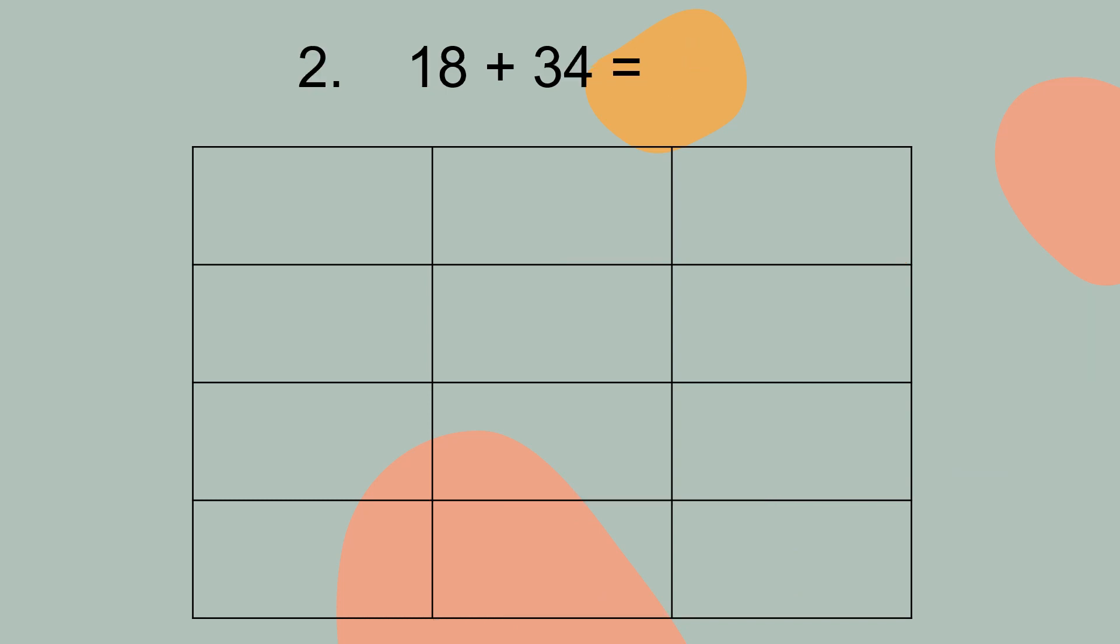We look at question number 2. 18 plus 34 equal to what? You count ones first. This is ones and this is tens.